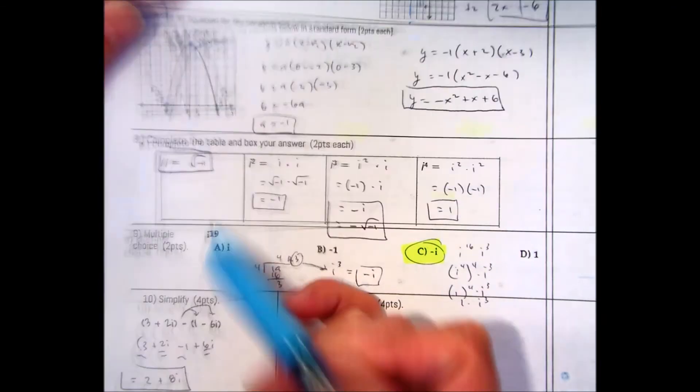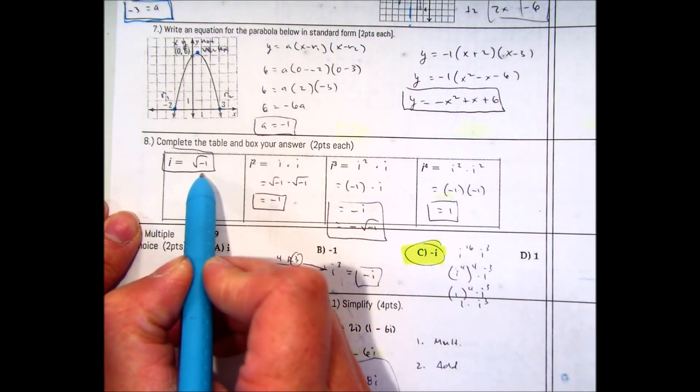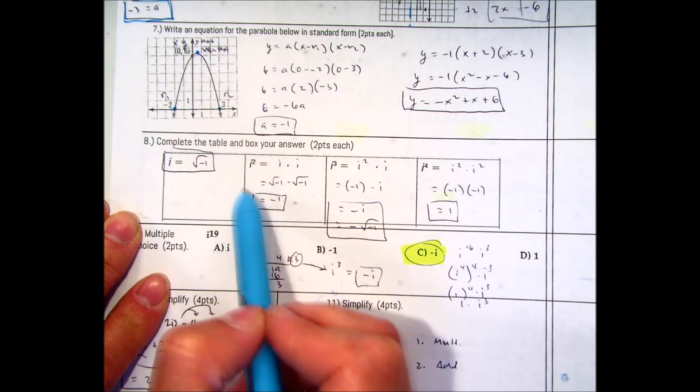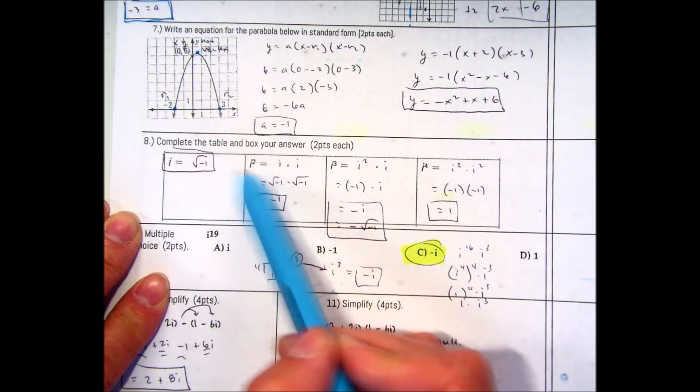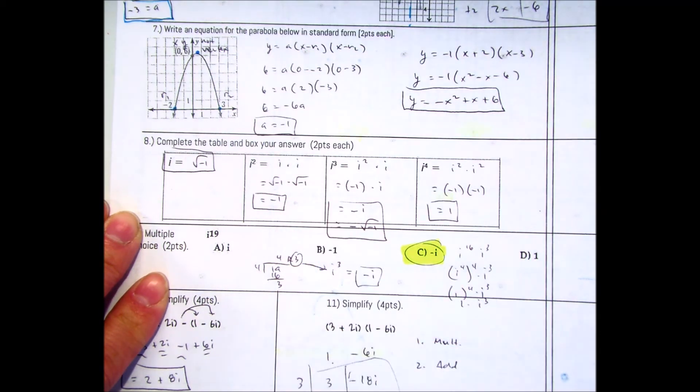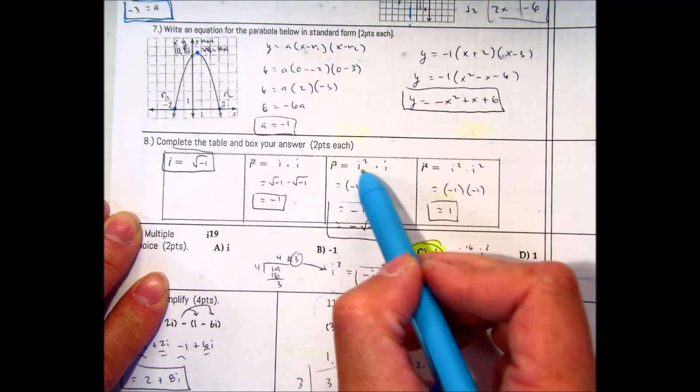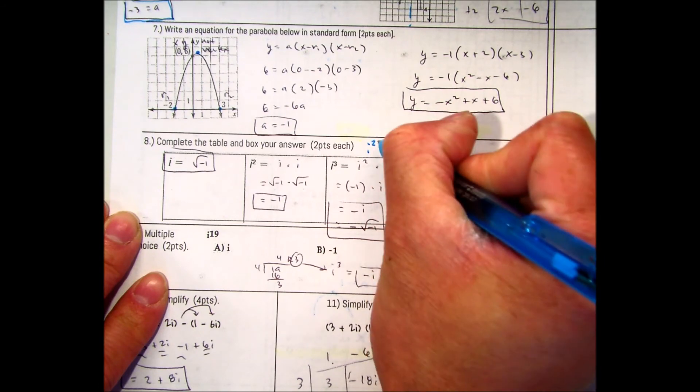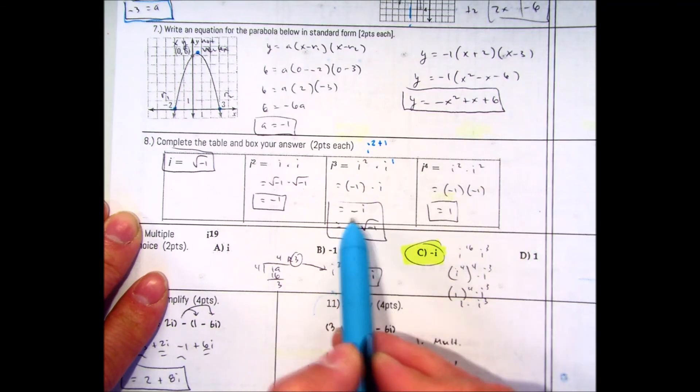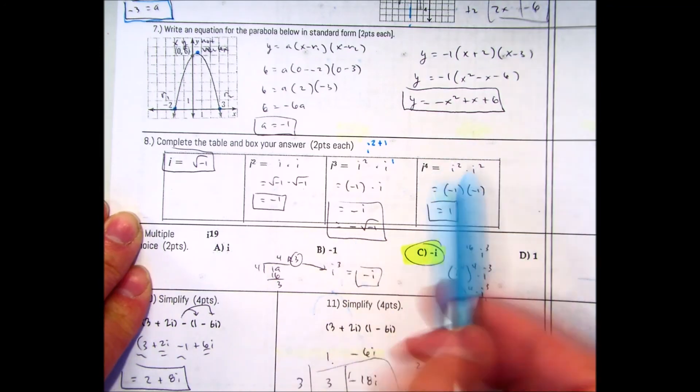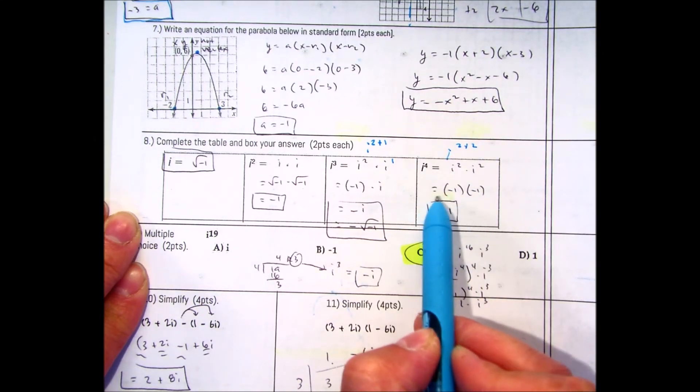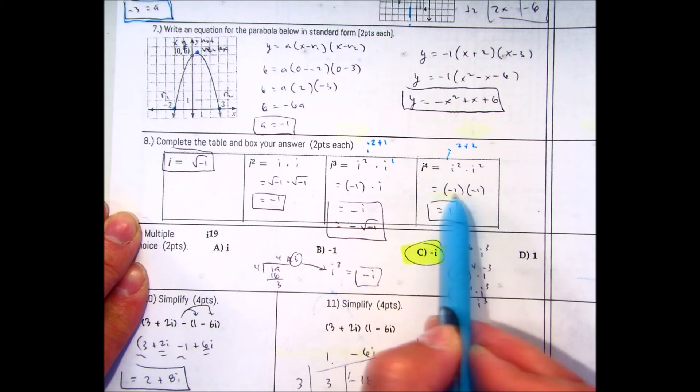Question number 8. It asks you to complete the table and box your answer. i is equal to square root of negative 1. A lot of students didn't show a lot of work, but I still gave you full credit. It's more helpful for you to actually derive these rather than just memorizing them. i squared is i times i and i is the square root of negative 1. The square root of negative 1 times the square root of negative 1 is just negative 1. i to the third power is i squared times i. Because remember that's something like i to the 2 plus 1. i squared is negative 1 and there's i. Negative 1 times i, you can have negative i or negative square root of negative 1. And i to the fourth power is just i squared. So remember that's i 2 plus 2. And then I have negative 1 and negative 1 and that gives you a positive 1.